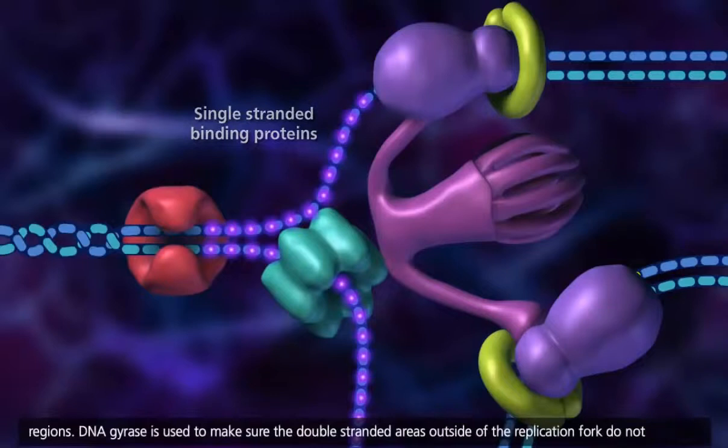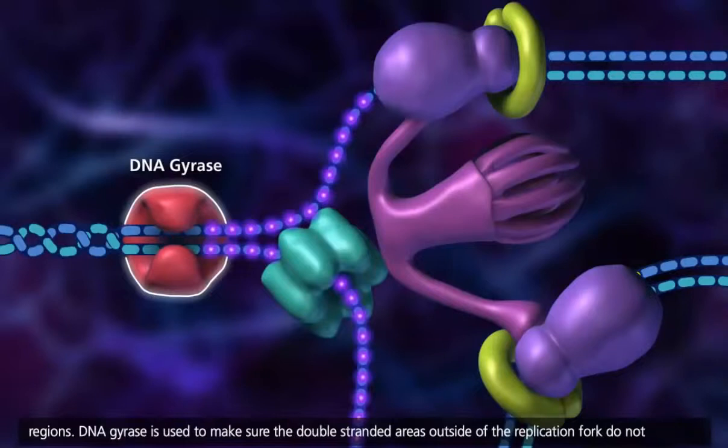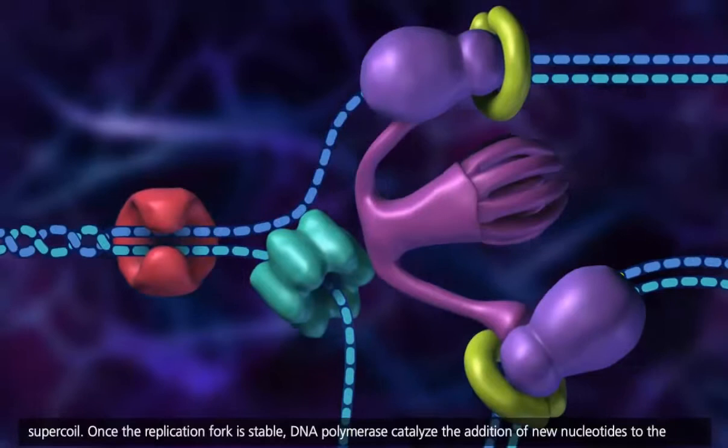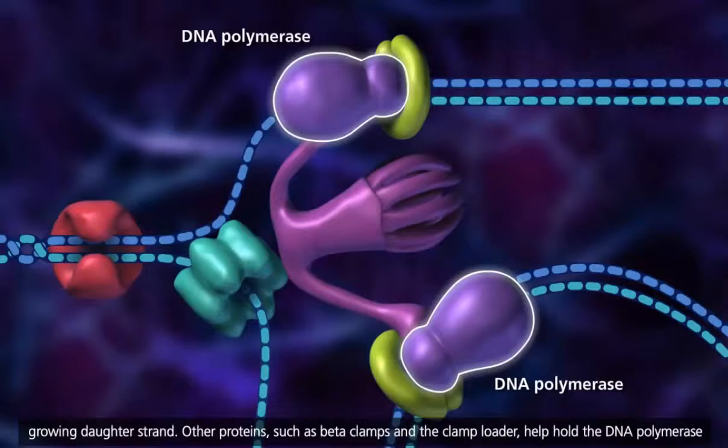Once the replication fork is stable, DNA polymerase catalyzes the addition of new nucleotides to the growing daughter strand. Other proteins, such as beta-clamps and the clamp loader, help hold the DNA polymerase in place on the DNA.